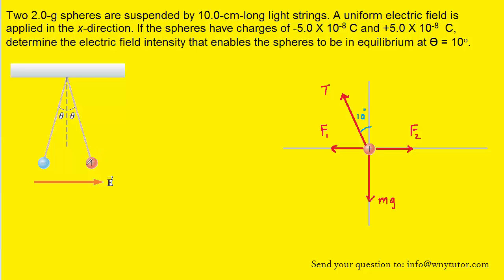Because the positively charged sphere is connected to a string, there is a tension force that is holding up the positively charged sphere, and we've labeled that force T. Notice that it's acting at a ten degree angle. In addition, we know that the positively charged sphere is attracted to the negatively charged sphere, so we've labeled a force F1 that represents that force of attraction.